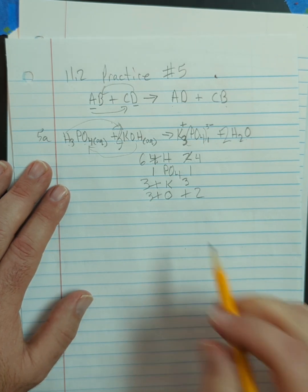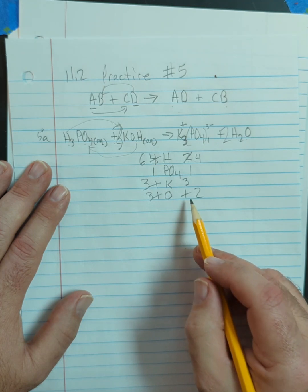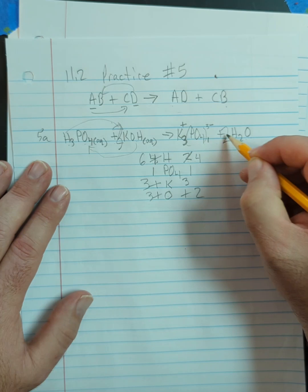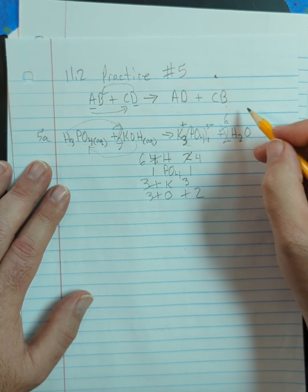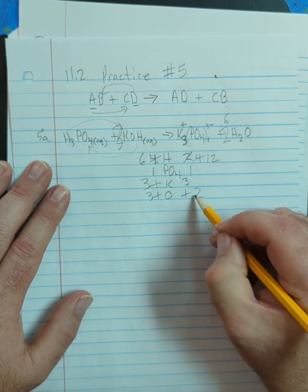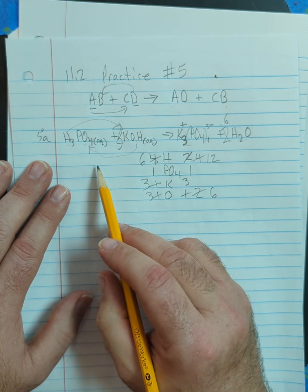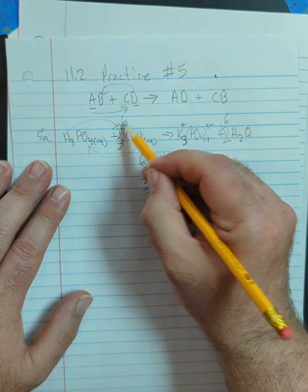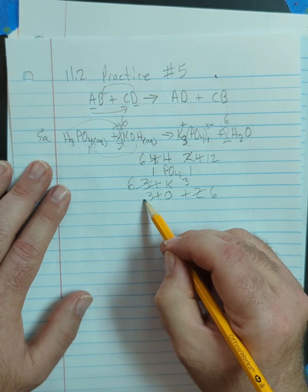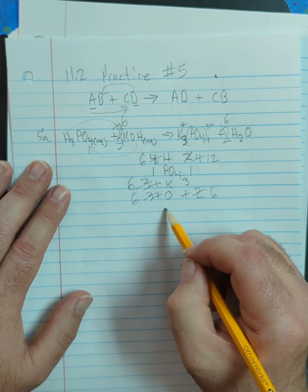I know I've got three and two here. So I'm going to bump this up to a six. That's going to give me 12 hydrogens and six oxygens. And I'm going to come over here, and I'm going to bump that up to a six. That gives me six potassiums, six oxygens.